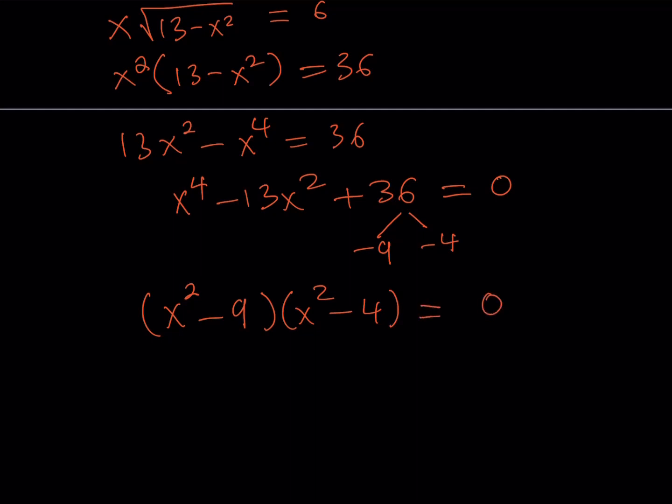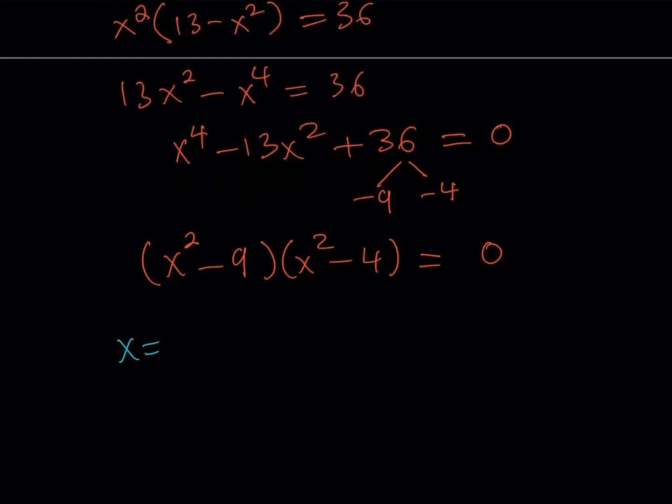Okay. Now, from here, as you know, we're going to set each factor equal to 0, and we'll be getting two solutions from each one. So we get x equals 3, x equals negative 3, we get x equals positive 2, and we get x equals negative 2.